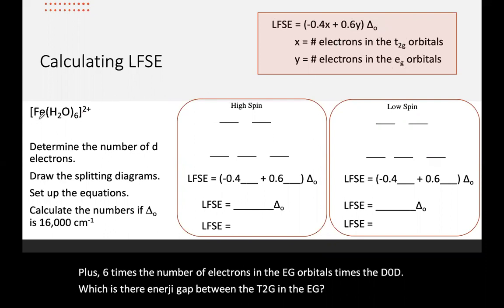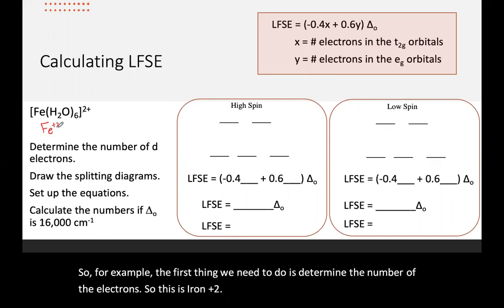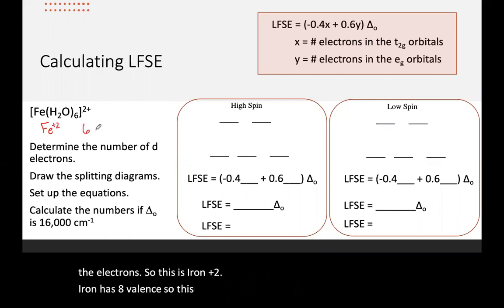For our example, the first thing we need to do is determine the number of d electrons. So this is iron plus two. Iron has eight valence, so this is six d electrons. Then we draw the splitting diagrams.